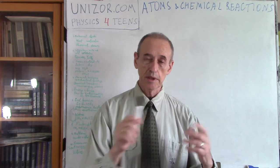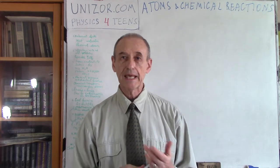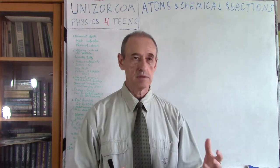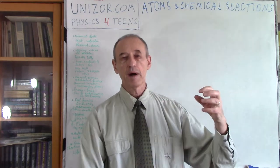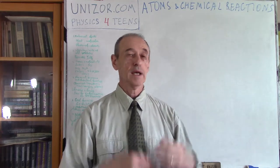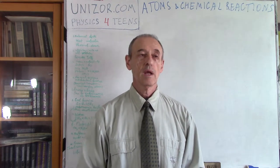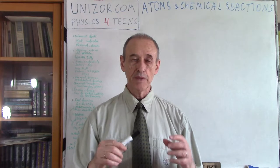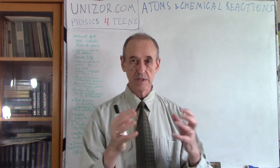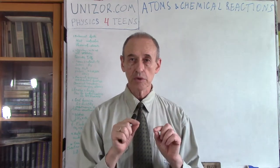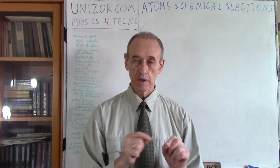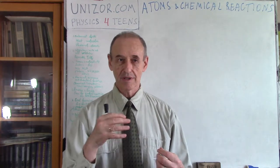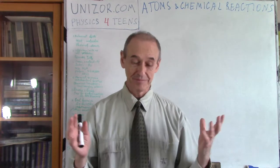Talking about chemical energy — let me start from something we have already covered. We started with mechanical energy, which is all about moving objects relative to one another. We have potential energy, like an object above the ground due to gravity, and kinetic energy when the object is moving. Our next type of energy was heat. Here we go a little bit deeper into the object — heat energy is related to molecules inside the objects and the intensity of their movement. Now we are going even deeper, inside the molecules, and that's where chemical energy is located.